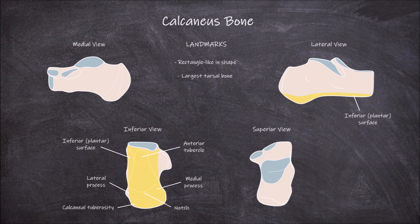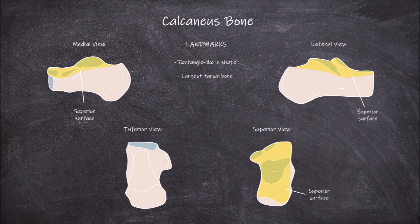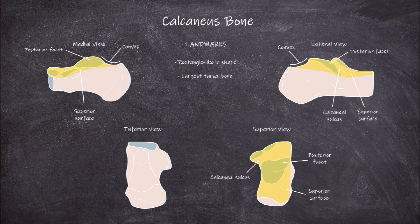The fourth surface is the superior surface. This surface is roughened and convex posteriorly. In the middle of this surface is the posterior facet of the three facets for articulation with the talus bone. Anterior to this facet is a depression in the bone known as the calcaneal sulcus. The anterior articular facet and the middle articular facet are located on the anterior portion of the surface.